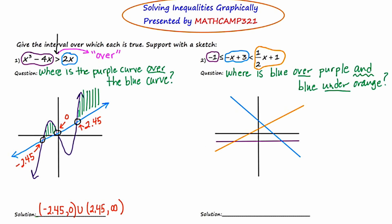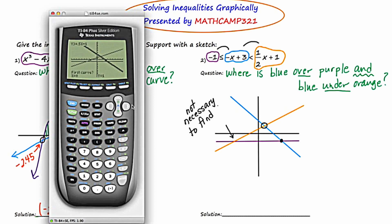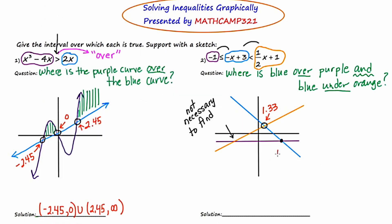The next decision is open circle or closed circle. Where the purple and the blue come together, there is an equal sign, so that's going to be a closed circle. Where the orange and the blue come together, that should be an open circle. For the uppermost intersection point, using second trace intersect, move the cursor and press enter three times — this gives an x value of 1.33. For the rightmost point, repeating the process gives x equals 4.